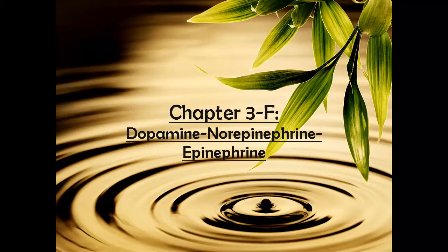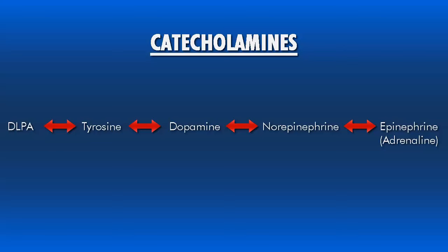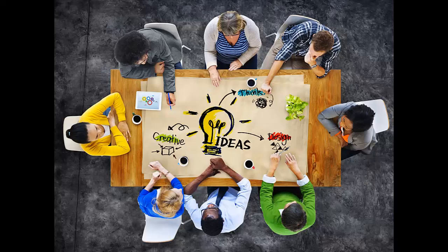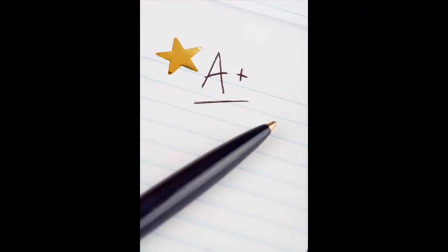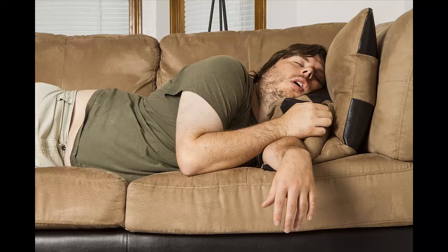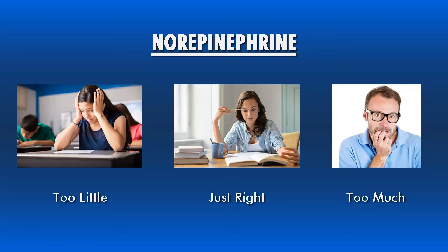Dopamine, norepinephrine, epinephrine. The dopamine, norepinephrine, epinephrine pathway is also called the catecholamine pathway. The amino acid precursors to this pathway are DLPA and tyrosine. Dopamine is the primary neurochemical of reward — it helps us seek a job well done, a rewarding intimate relationship, and creative thought. Too little dopamine would have a person feel flat and lethargic; too much may make a person feel manic. Norepinephrine is what allows us to focus and to learn. Too little means a poor attention span; too much means anxiety.